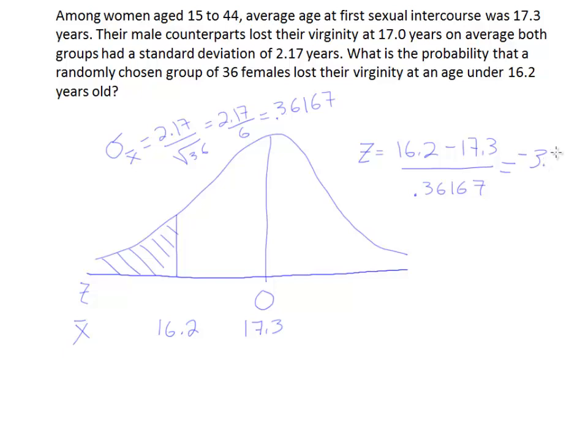So negative 3.04. All right, so that's your z-score that's going to go down here. If I look it up, I'm going to get the area from here to here, which is not what I want, but it's going to be something that will help me get the area in the tail.